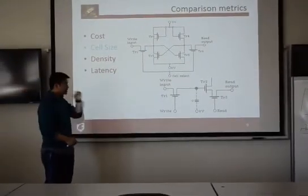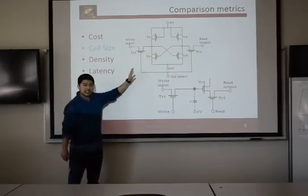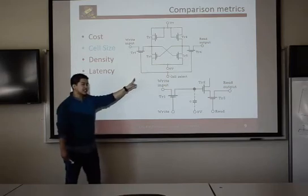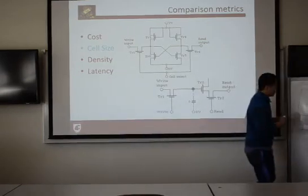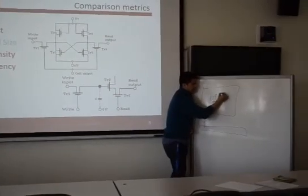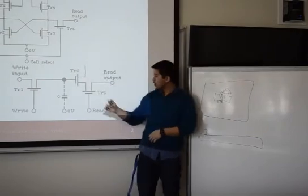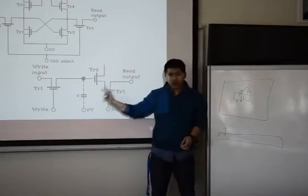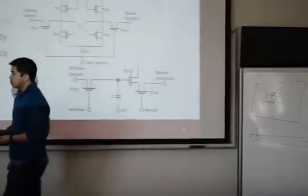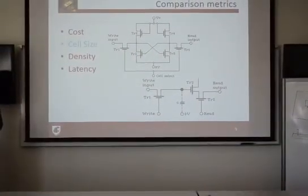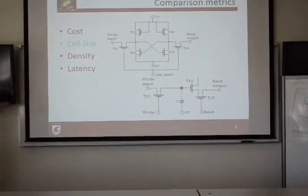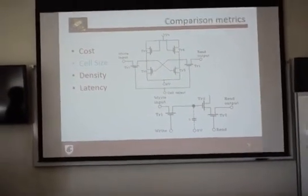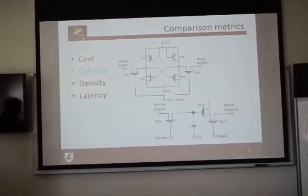The next comparison metric is the size of the memory cell itself. At the top we have static RAM and at the bottom DRAM. As you can see, SRAM takes six transistors, while DRAM only needs one transistor and one capacitor, which can be built in the z direction. This contributes to both the cost and the density of how much you can fit into one small chip.